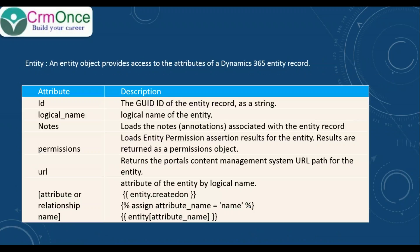The entity object returns the following parameters: id — the record GUID; logical name — the logical name of that entity; nodes — loads the nodes associated with that particular entity record; permissions — the entity permissions associated with that record; and url — the portal CMS URL of the entity.